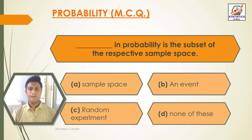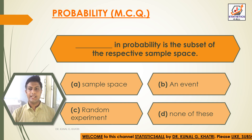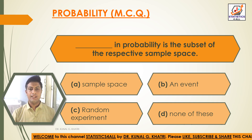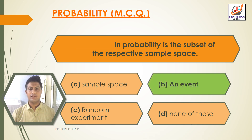Next question: dash in probability is the subset of the respective sample space. Option A: sample space. Option B: an event. Option C: random experiment. Option D: none of these. The answer is Option B — an event in probability is the subset of the respective sample space.